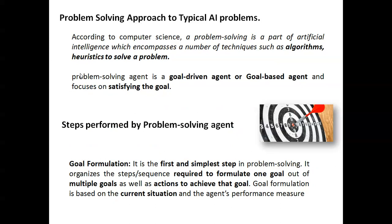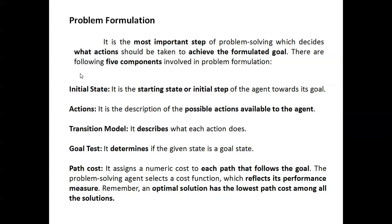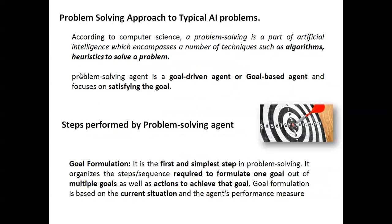So in goal formulation, there are so many goals. Out of so many goals, they have to take only one goal — that goal with actions relevant in the current scenario. That is agent performance. Goal formulation is nothing but: many goals are available for achieving the goal state, but only one goal will be selected based on the current situation. Agent performance will be measured based on how they select the goals.